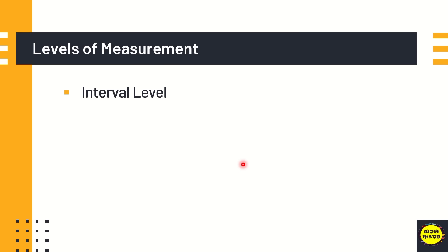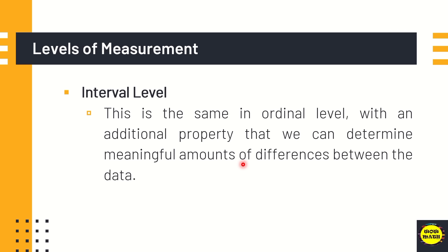Interval level. This is the same in ordinal level, with an additional property that we can determine meaningful amounts of differences between the data. For example, the body temperature and the intelligence quotient. When we say the intelligence quotient, we can tell not only which person ranks higher in IQ, but also how much higher he or she ranks with another. But zero IQ does not mean no intelligence. So the students could be classified or categorized according to their IQ level.